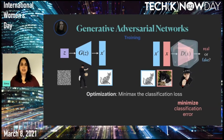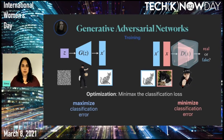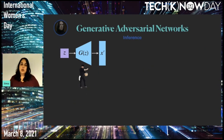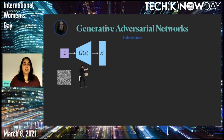When G is being trained, D is fixed and we maximize the classification error. In inference, we no longer need the discriminator. We can just randomly sample Z and generate images using the generator.